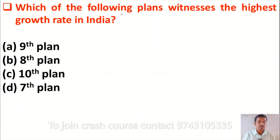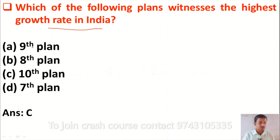The next question is: which of the following plans witnessed the highest growth rate in India? Option A: 9th Plan, option B: 8th Plan, option C: 10th Plan, option D: 7th Plan. The correct answer is option C, the 10th Plan.